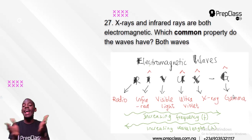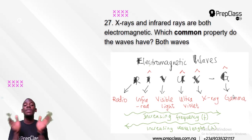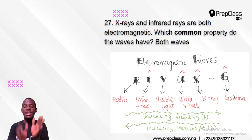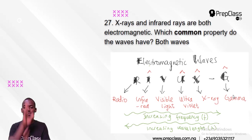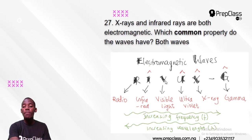Transverse means they travel perpendicular to the direction of propagation. Light is transverse because it does not travel in the same direction as its propagation — light travels perpendicular. Light can spread out in multiple directions. So light is not longitudinal; it is transverse. And because visible light is among the electromagnetic waves, all of them are also transverse waves — they can all travel perpendicular.